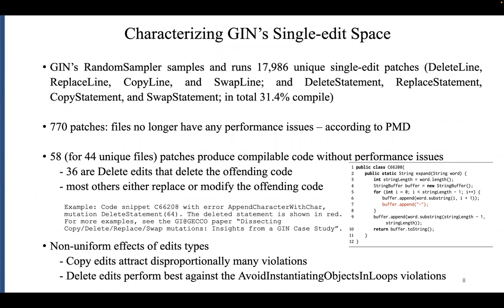Let's dig a little bit deeper into these 770 patches. Many of them unfortunately did not compile, which points at a number of issues we will see later on. Nevertheless, there were 58 patches that produced compilable code that did not exhibit any performance issues. Of these, 36 are actually delete edits that simply delete the offending code, so it's not too surprising that the particular performance issue has gone away. In the other cases, most edits either replace or modify the offending code. One example on the right-hand side shows line 7 deleted — statement 64 deleted — so that the append-character-with-character rule is no longer triggered.